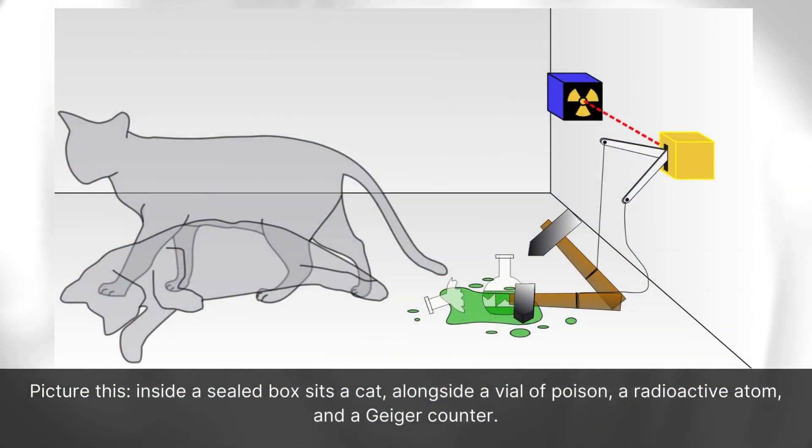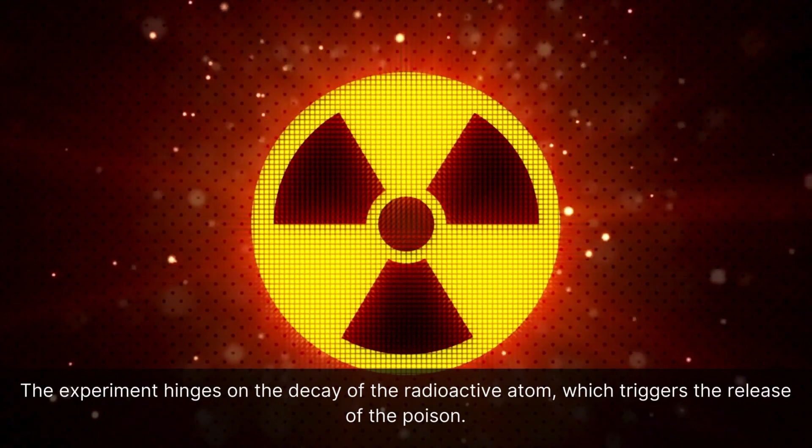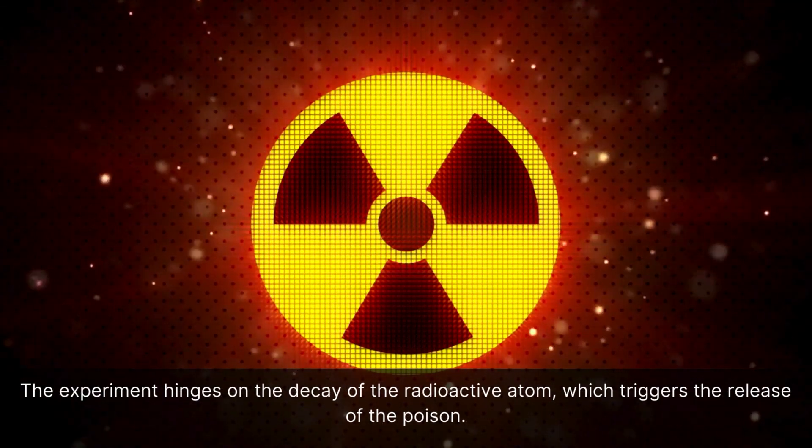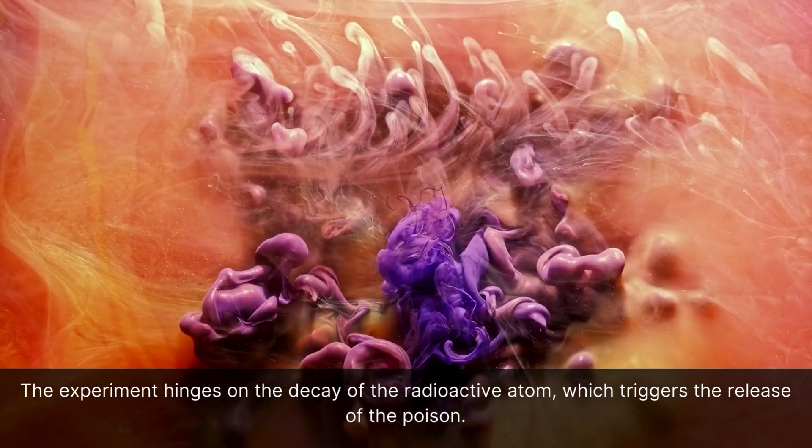Picture this. Inside a sealed box sits a cat, alongside a vial of poison, a radioactive atom, and a Geiger counter. The experiment hinges on the decay of the radioactive atom, which triggers the release of the poison.